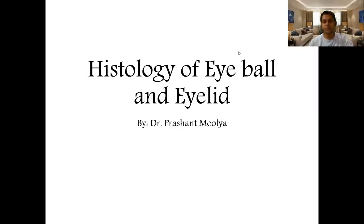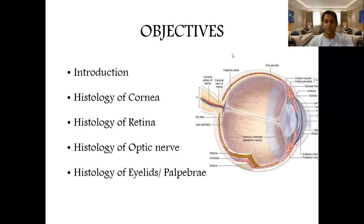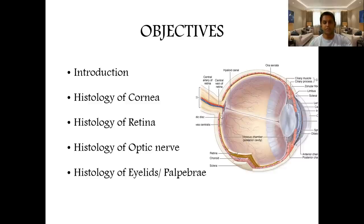Hello everyone. Today we are dealing with histology of the eyeball and eyelid. The objectives of my talk are: I'll be speaking on histology of the cornea, then on the histology of the retina, which is the innermost coat, then the histology of the optic nerve, and finally the eyelids and the palpebral conjunctiva.